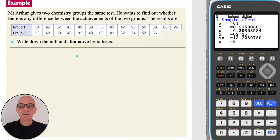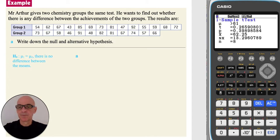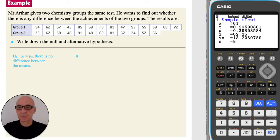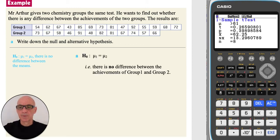In this question, we begin by writing down the null and alternative hypotheses. When comparing the mean of two populations, the null hypothesis H0 is that there is no difference between the means — i.e., there is no difference between the achievements of Group 1 and Group 2.